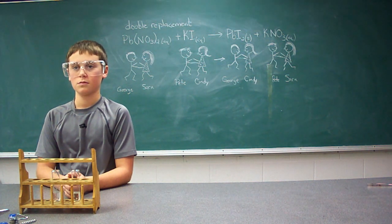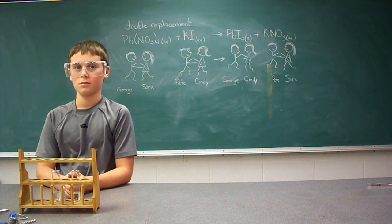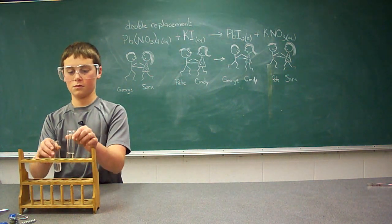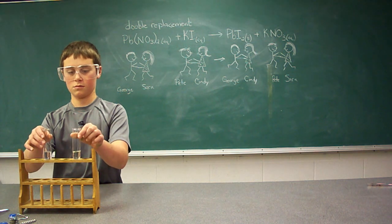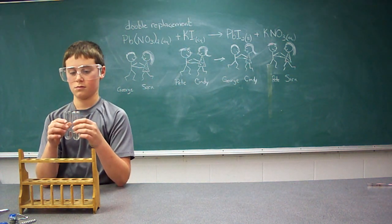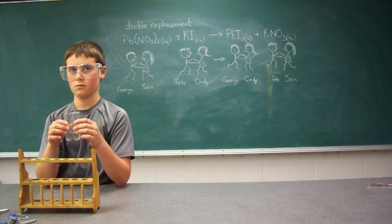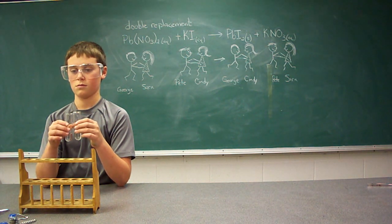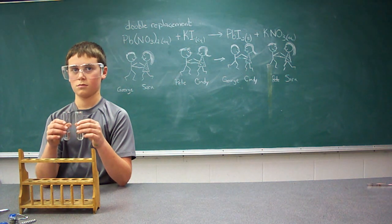We're back here in chemistry class identifying different types of chemical reactions. In this chemical reaction, called a double replacement reaction, we're going to use two different ionic compounds. As they combine, the cations are going to disassociate from their respective anions and then reconnect with the other anion to form two new ionic compounds — one soluble in water, and one insoluble, which will form a solid precipitate.